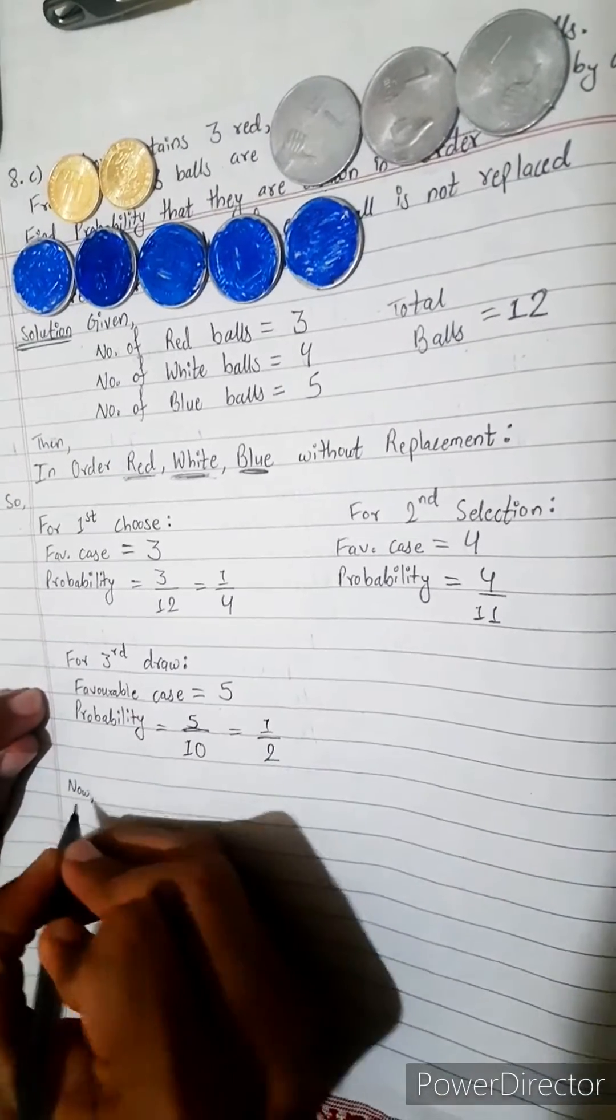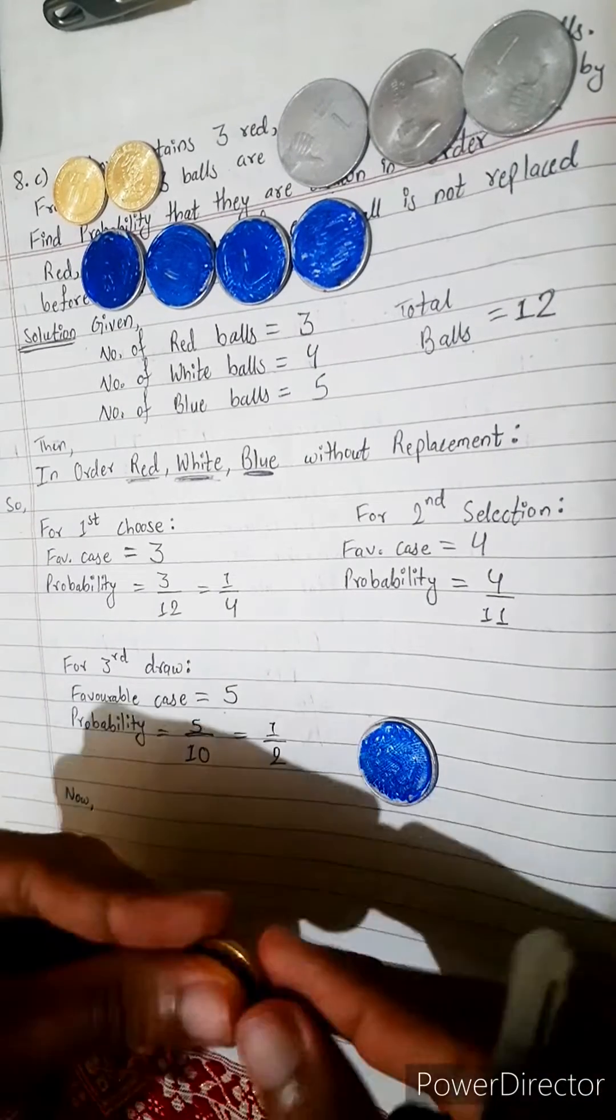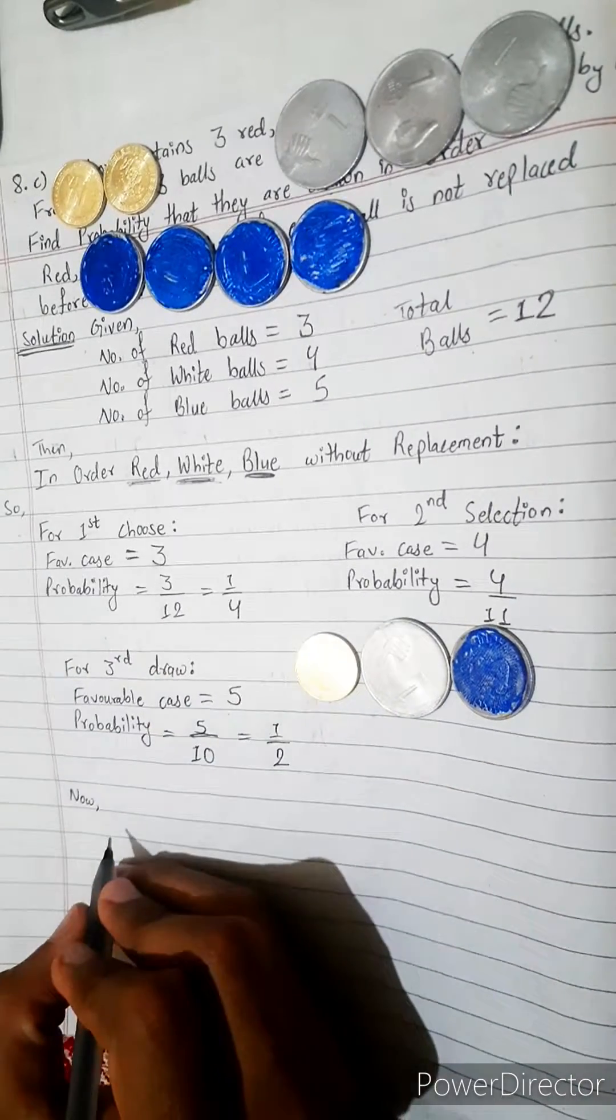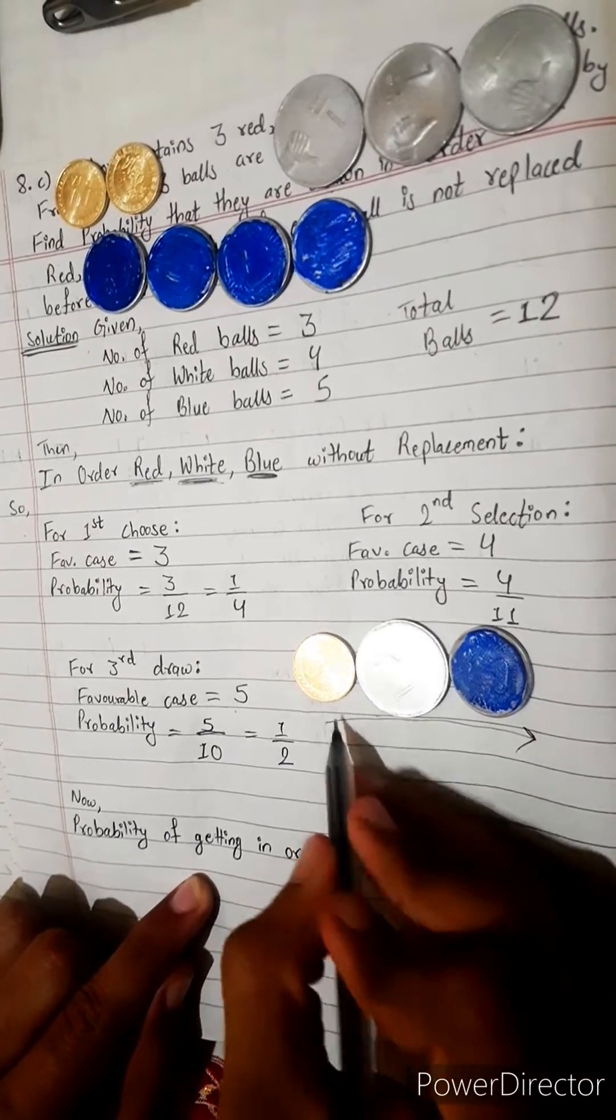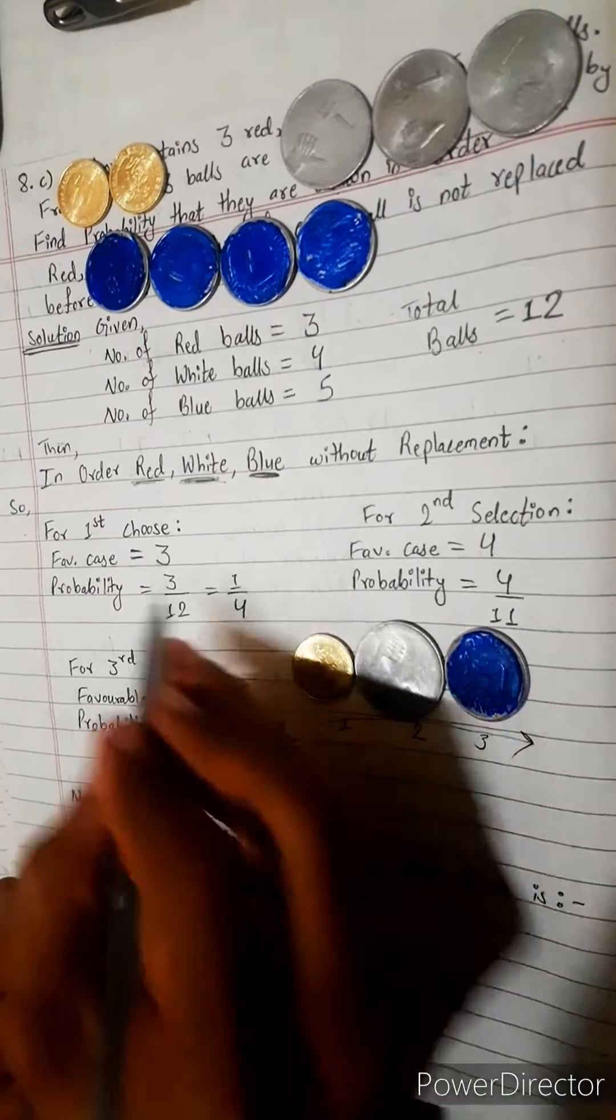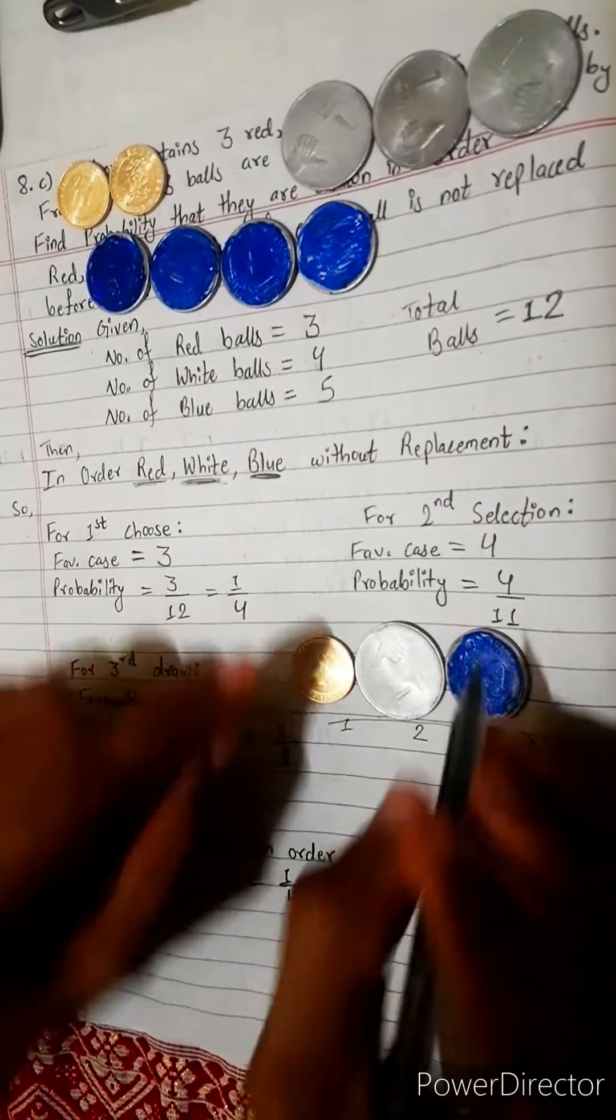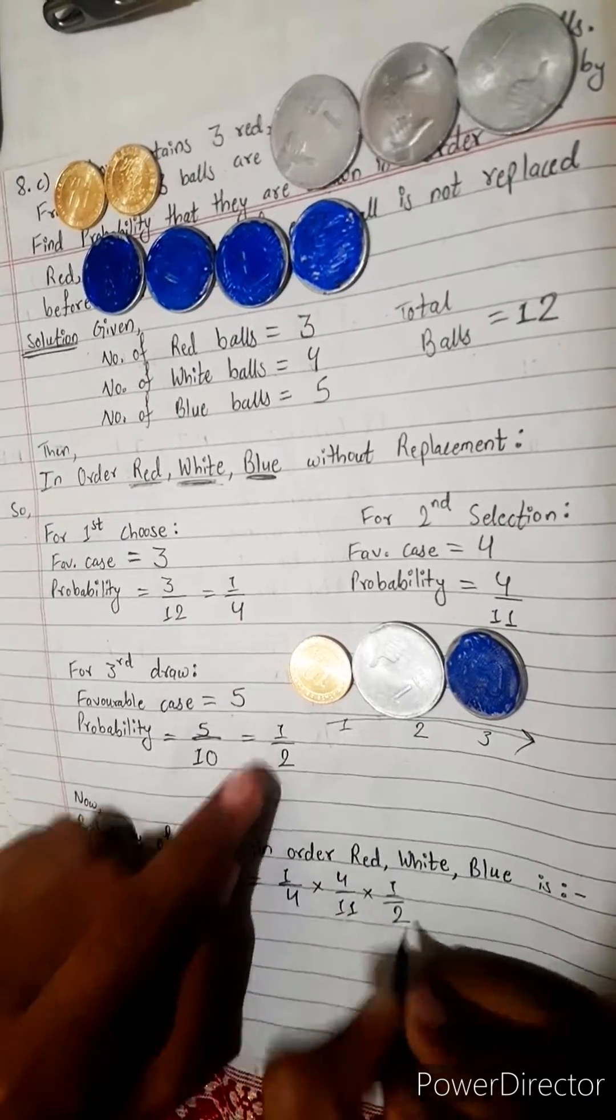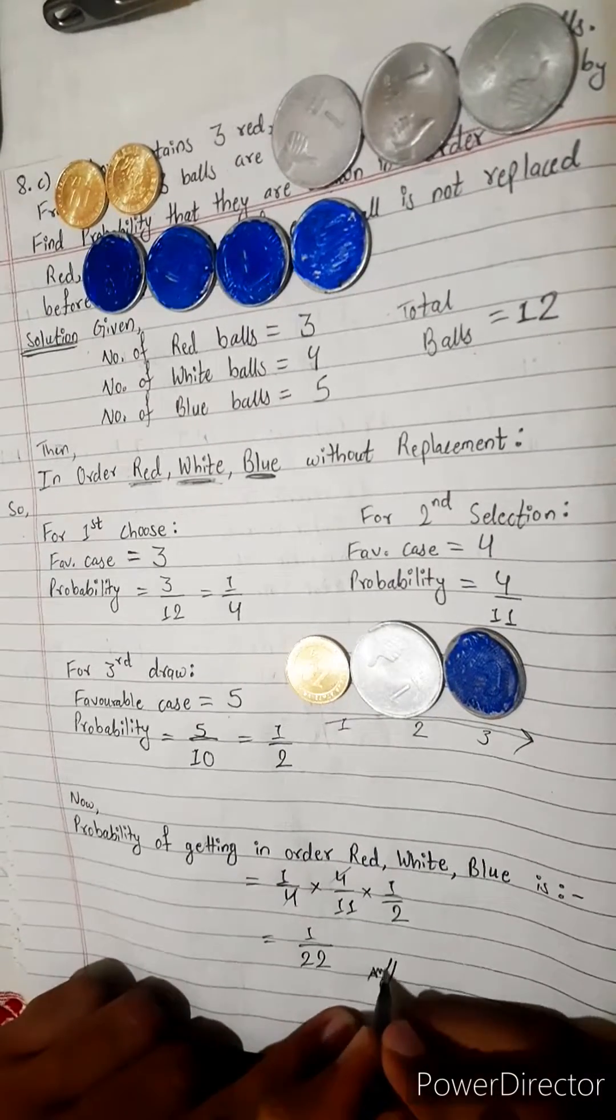We got serially: red, white, blue. Probability of getting in order, serially from red to blue - first red, second white, and third time we get blue. This will be: we have to multiply all probabilities because this is mutually dependent case. 1 by 4 for red, and then 4 by 11 for white, and then 1 by 2 for blue. So 4 cancels: 1 by 11 to 22. 1 by 22 is our answer.